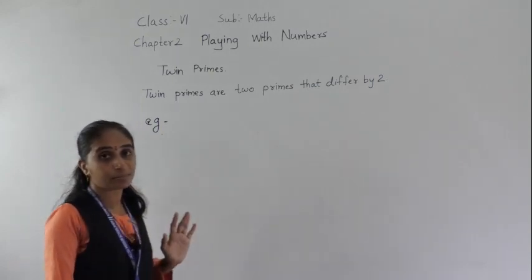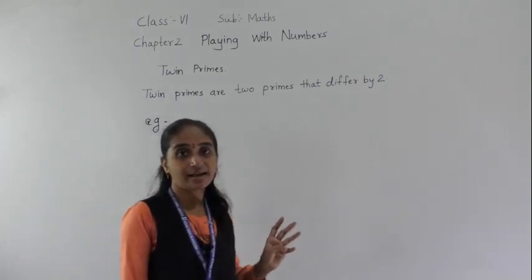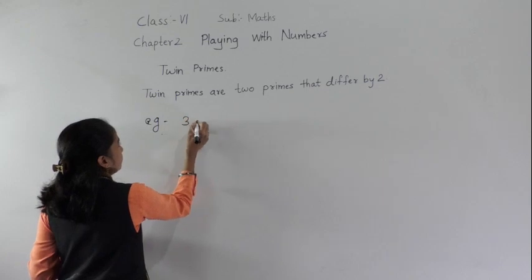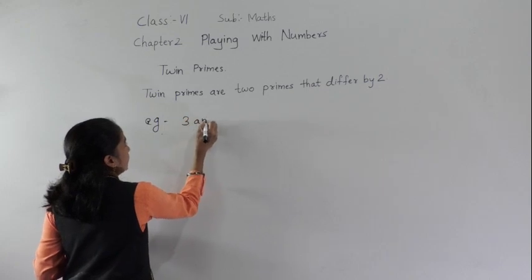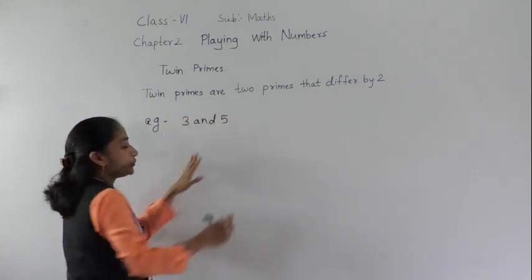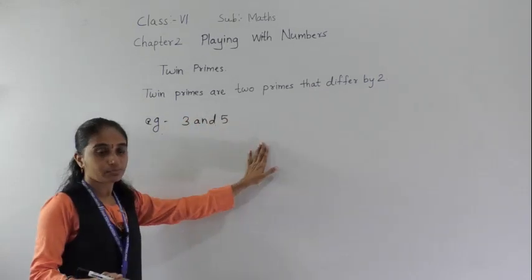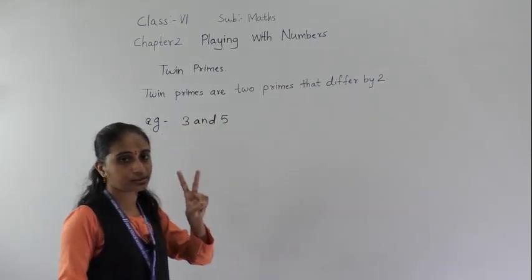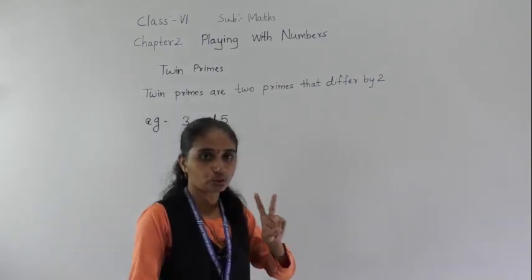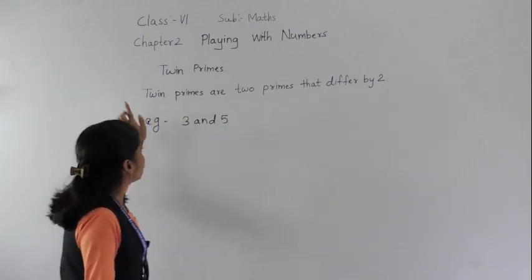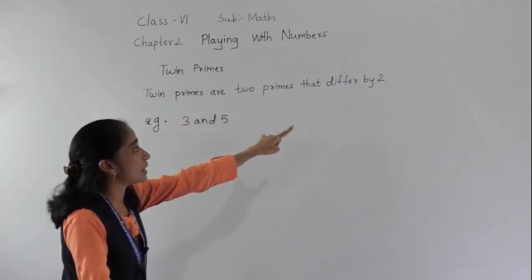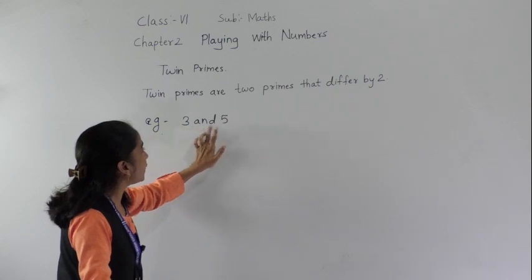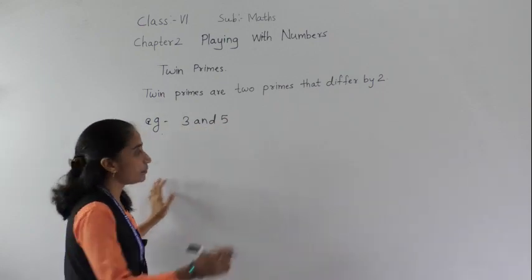Which are the twin prime numbers? Three and five. Three and five are twin primes because they differ by two. Five minus three equals two. So three and five are twin primes.